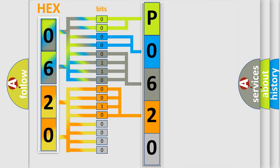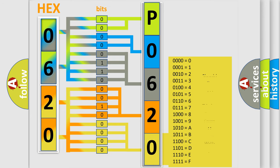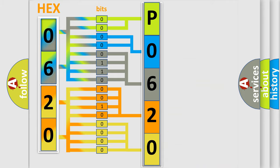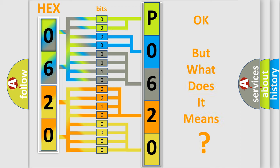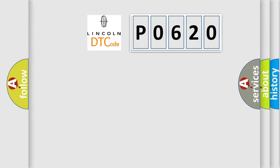A single byte conceals 256 possible combinations. We now know in what way the diagnostic tool translates the received information into a more comprehensible format. The number itself does not make sense if we cannot assign information about what it actually expresses. So, what does the diagnostic trouble code P0620 interpret specifically for Lincoln car manufacturers?